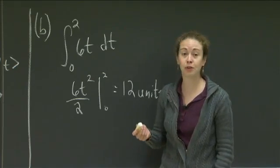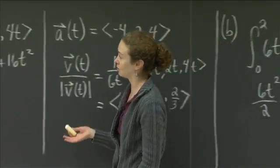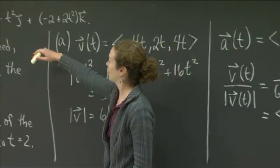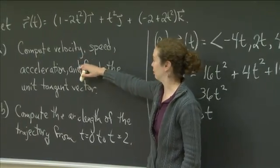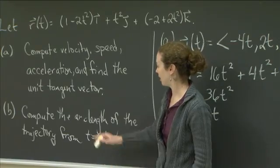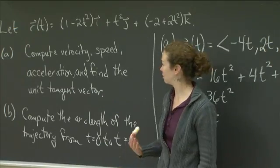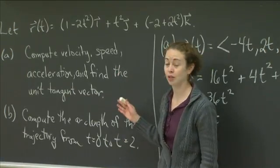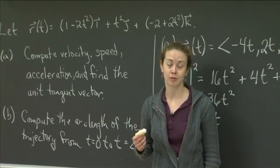So this really was a purely computational type of problem. All we were doing, if you come back over here and you recall what we were trying to do, is we started off with a position vector, we just did a lot of computation. We found the velocity, the speed, the acceleration, the unit tangent vector, and then we just wanted to find the arc length of the trajectory. So this was all very computational, but just to make sure we understood what all the terms meant and how they were related to one another. So I'll stop there.